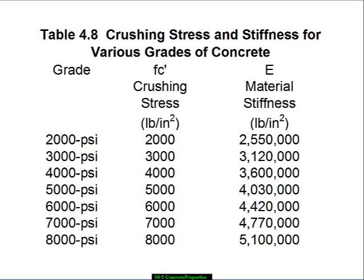For concrete we have two primary parameters. In the case of steel we talked about yield stress; in the case of concrete we use the symbol F sub C prime — the C meaning compressive failure and F standing for stress, or sometimes people say C stands for crushing. These values are given in pounds per square inch (PSI): 2,000 PSI has a crushing stress of 2,000; 8,000 PSI has a crushing stress of 8,000. We sometimes call these 2 KSI, 3 KSI, and so forth, so you need to be nimble about reading the units.